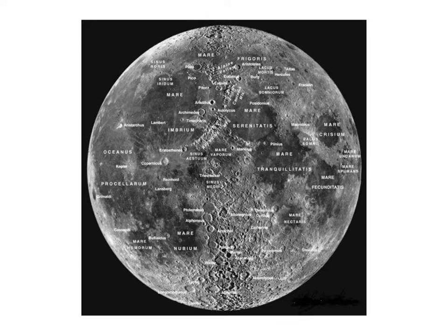Let's take a quick look at the Moon. Remember that Aristotle felt that it was a perfect sphere and unblemished, but Galileo with his telescope was able to see that there were features on the Moon. So let's look at a couple of these features as we go through.